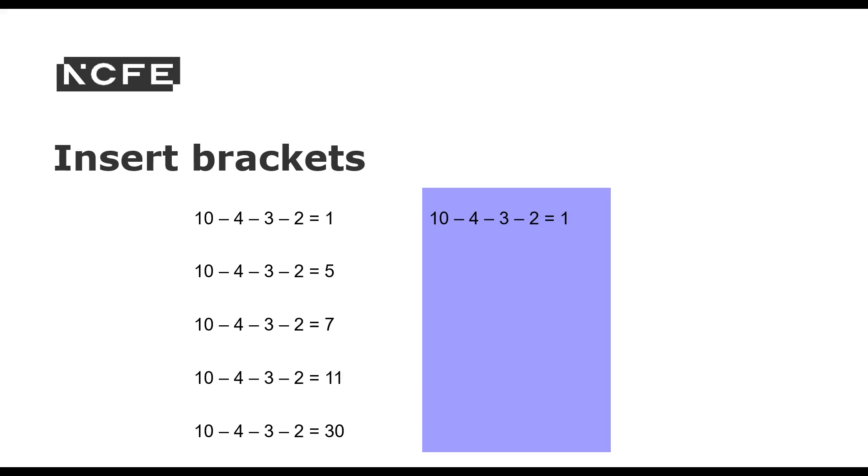So for this first one, we don't need any brackets at all. 10 take 4, take 3, take 2 is equal to 1. For this one, if we do the 3 take 2 first, that gives us 1. So 10 take 4 is 6, take 1 is 5. Here, we've put the 4 take away 3 in brackets. So 4 take 3, we do that first. That's 1, 10 take 1 is 9, take 2 is 7.